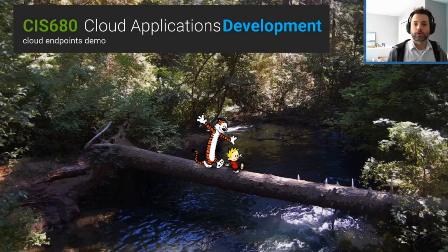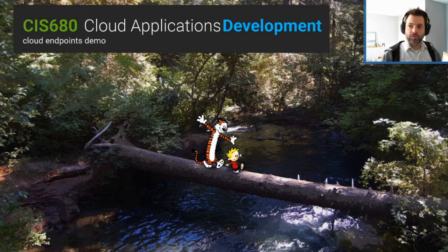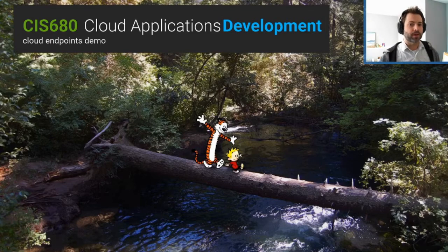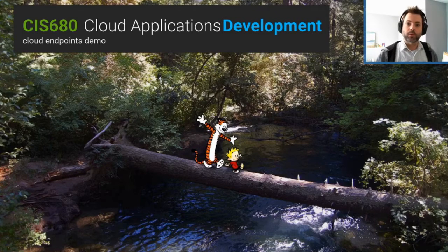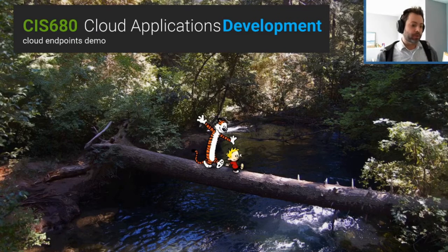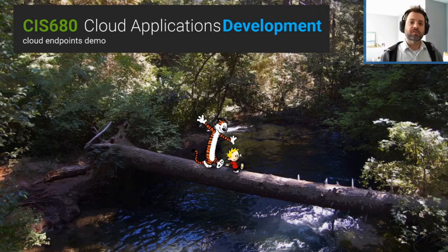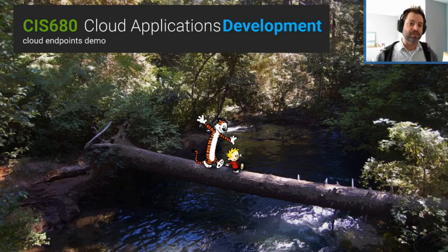Hey everybody, welcome back. Today we're going to do a demo on cloud endpoints. This is going to be following one of the quick start guides posted on Google's main page — not a codelab, just basically going through documentation doing some basic things. We'll be using the ESP v2 API, which is their interface over an open API type spec. We are also going to be downloading and installing gcloud to run locally, so that's basically the Cloud SDK.